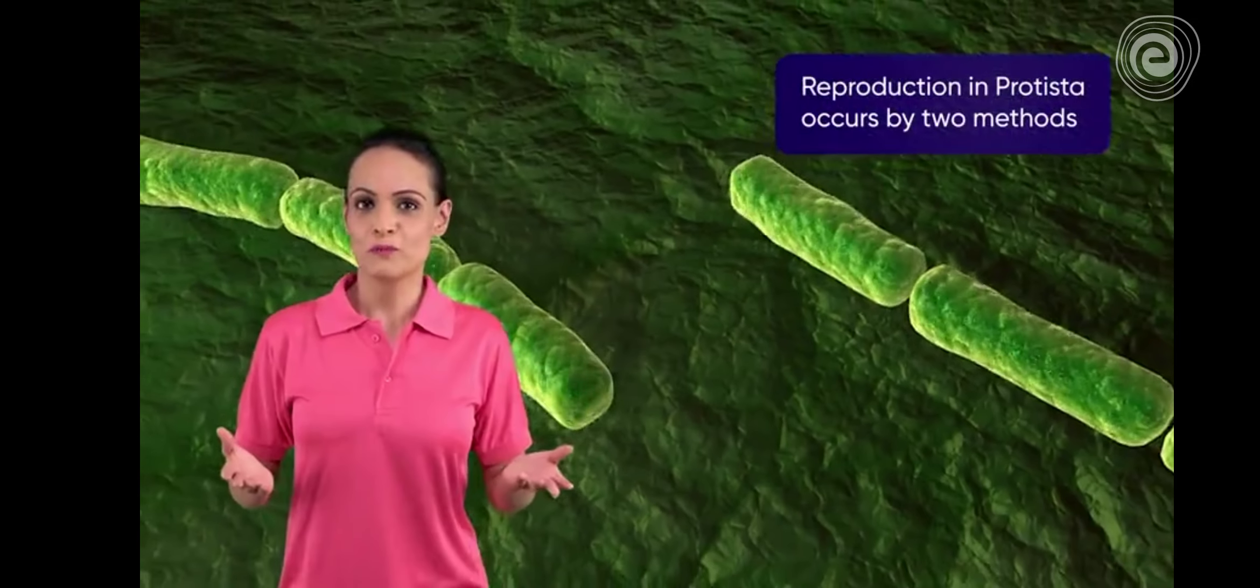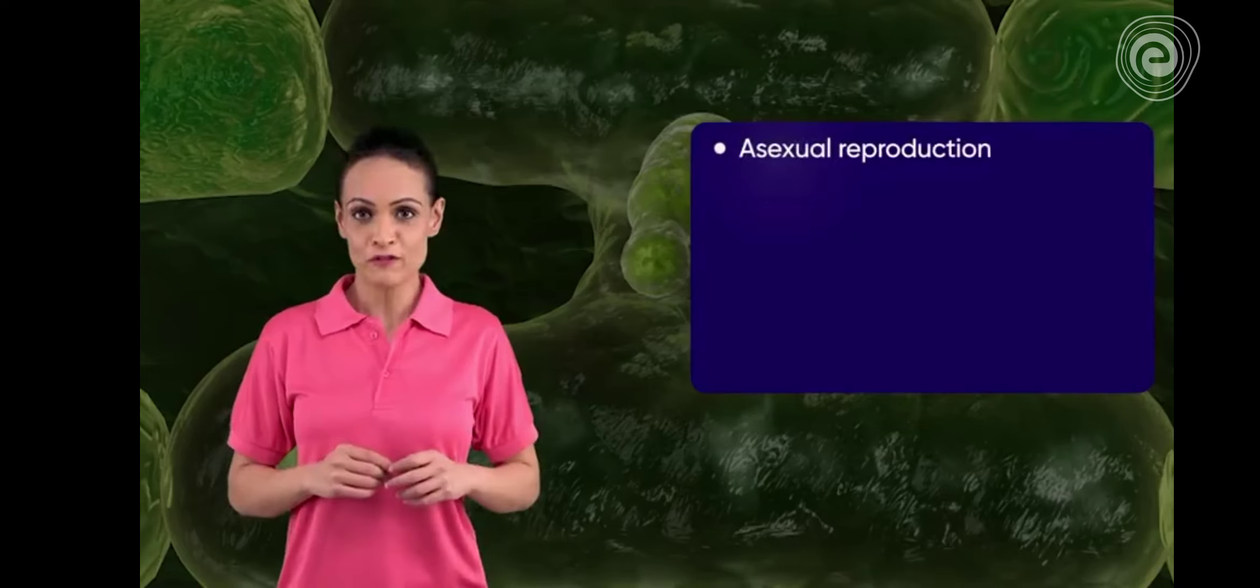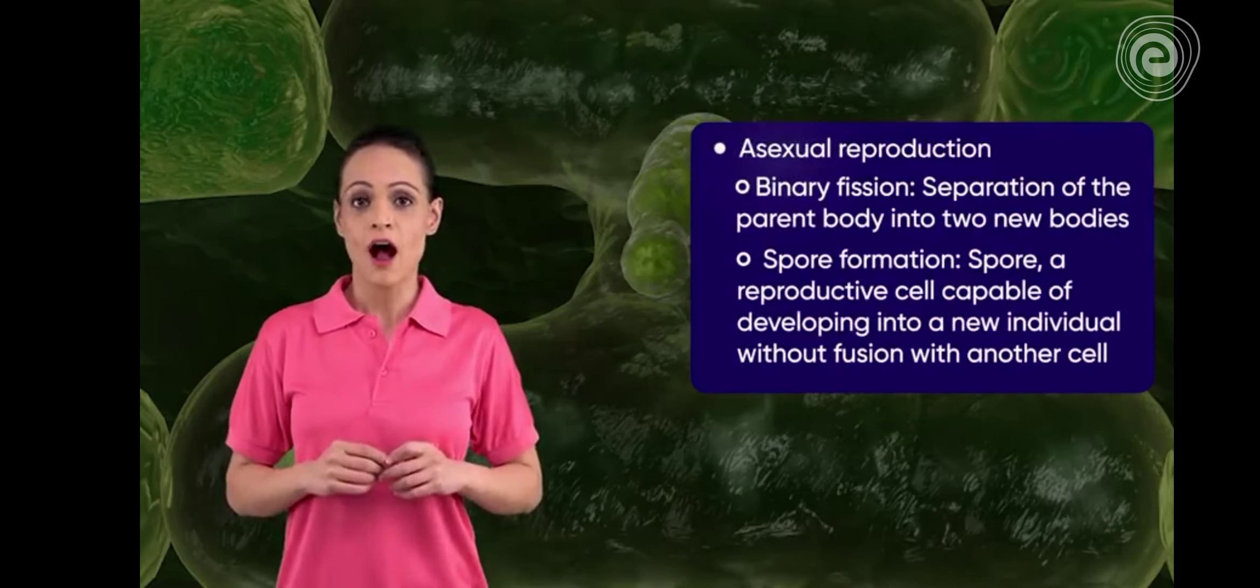Reproduction in Protista occurs by two methods: asexual reproduction and sexual reproduction. Binary fission and spore formation are asexual methods of reproduction, while conjugation is the sexual method of reproduction.